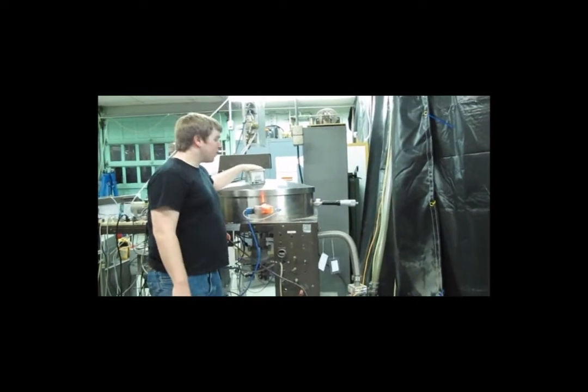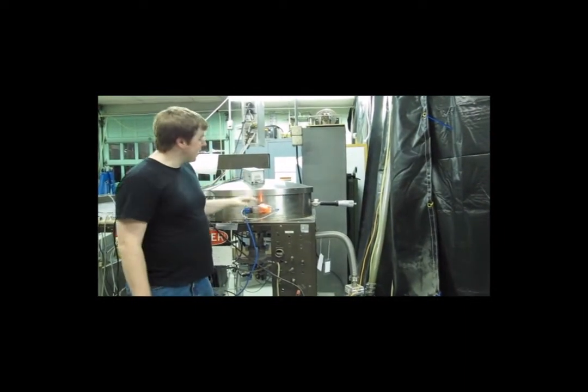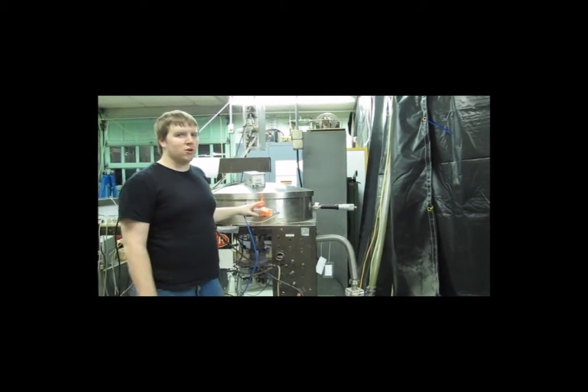Up here is how we measure the pressure. This is the convectron. It's good for relatively high pressures. Here is the ion gauge, which is used for much, much lower pressures.